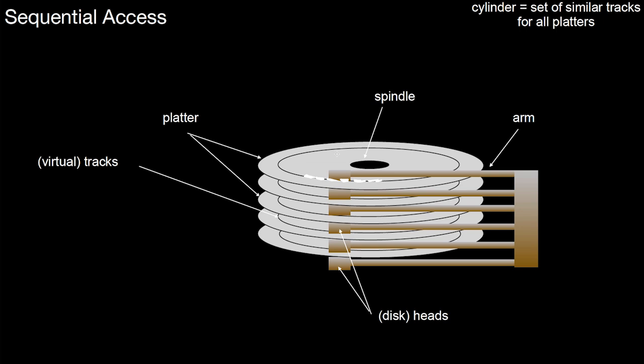Then you keep reading sequentially. Once you've finished reading this track, you switch to a different disk head. You stay on the same cylinder but switch heads. Switching heads is relatively fast, on the order of one millisecond. Once you switch successfully, you read from the same cylinder using a different side of a platter, and continue doing that, switching through all heads.